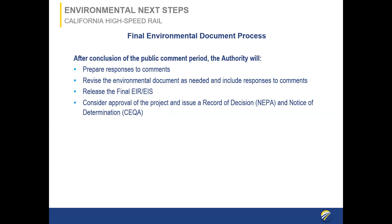After the conclusion of the public comment period on July 31st, the authority will prepare responses to comments. Those comments are incorporated into the final Environmental Impact Report/Environmental Impact Statement. In the final EIR/EIS, revisions are made to address factual corrections or clarifications needed in response to comments. Once the final EIR/EIS is completed and published, it is presented to the authority board of directors to consider approval of the project and issuance of a record of decision under NEPA and filing a notice of determination under CEQA.